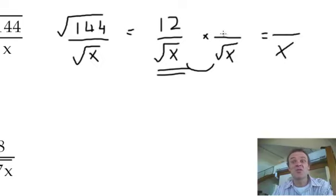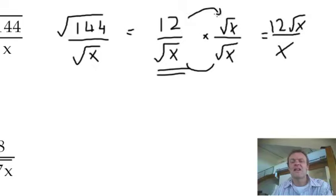But, of course, on the numerator, I've also got to multiply by the root x. Whatever you do to the bottom, do to the top. So finally, what do I have? Just 12 root x. Is that it? You know, I can't really do much with these two. That's it.